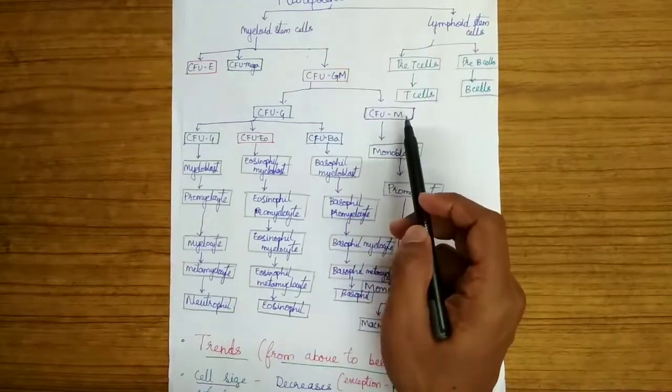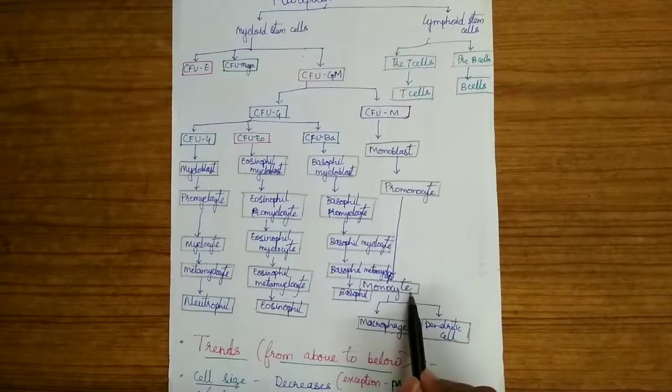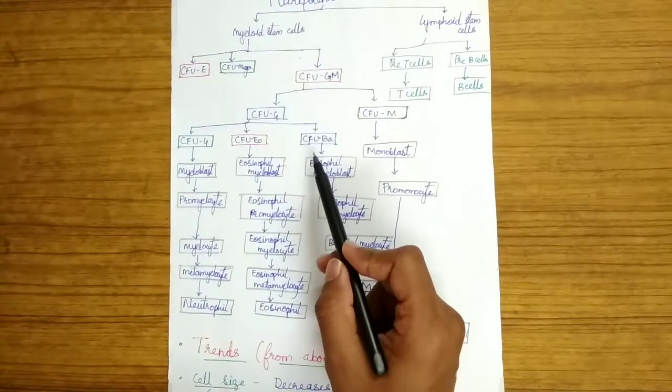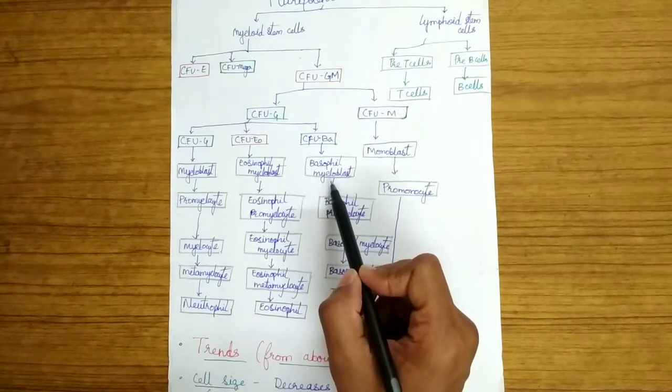The colony forming units of monocyte give rise to monocyte cells which divide into macrophages and dendritic cells in the tissues. The colony forming units form the blast cells in both the lines.